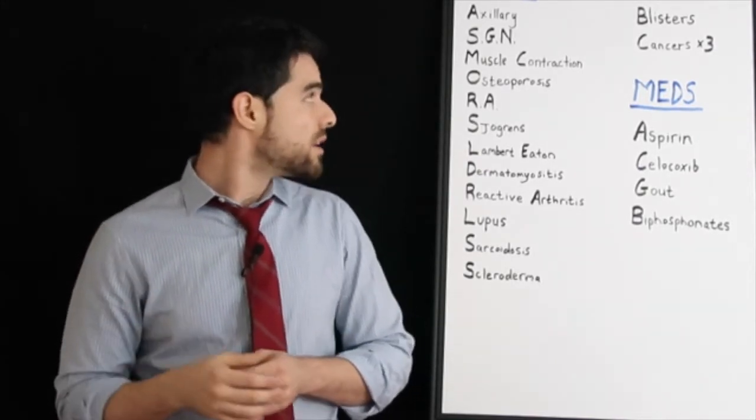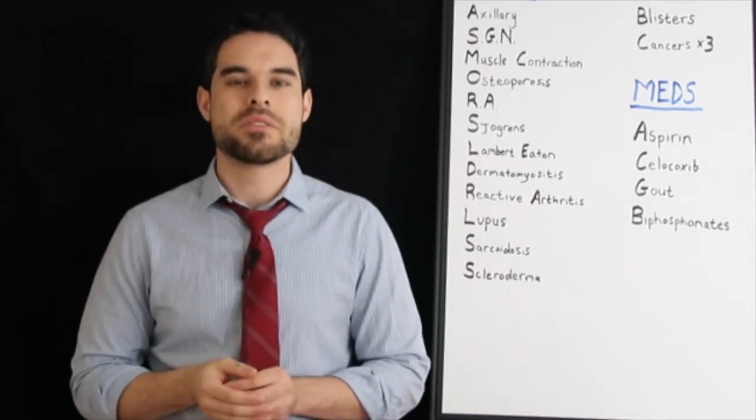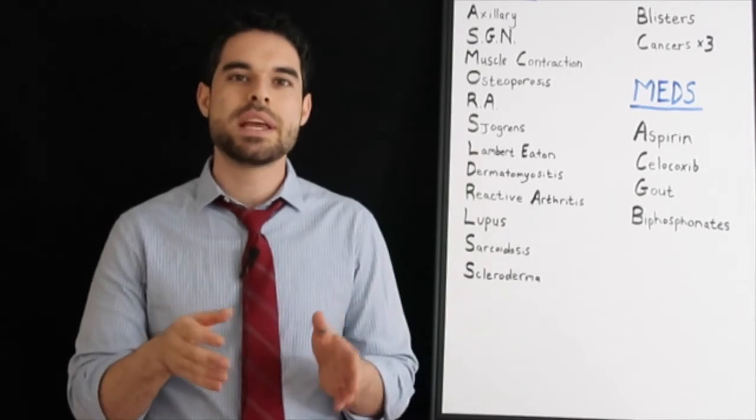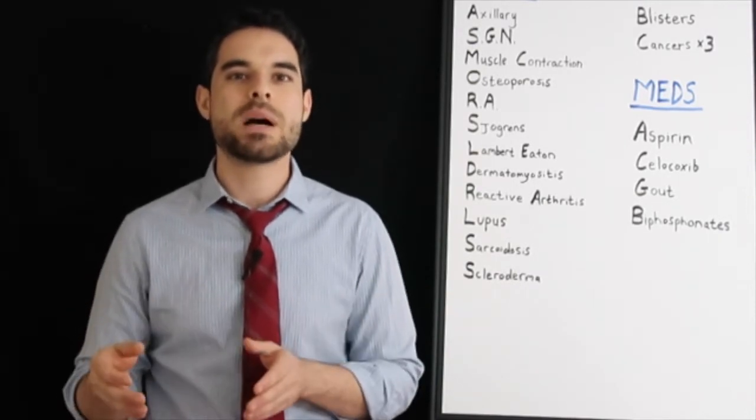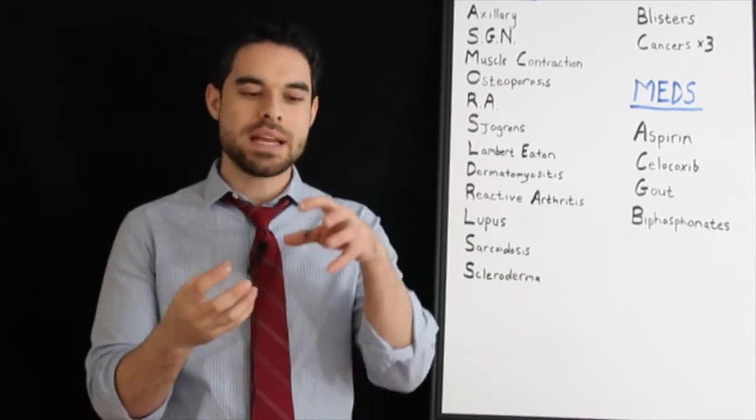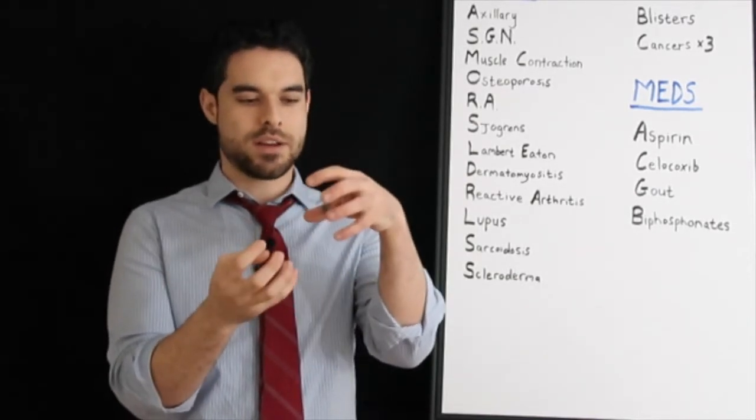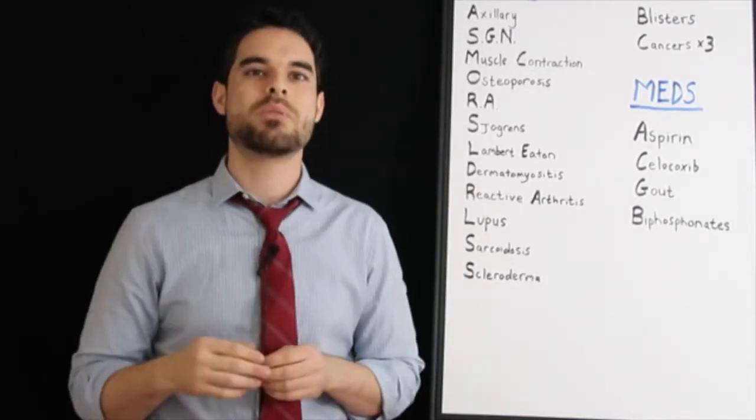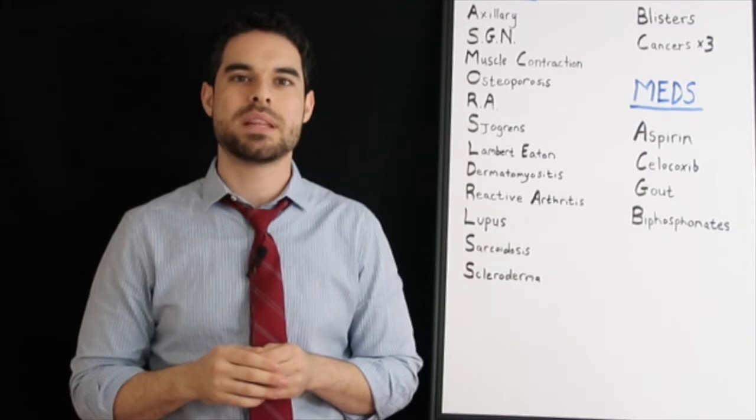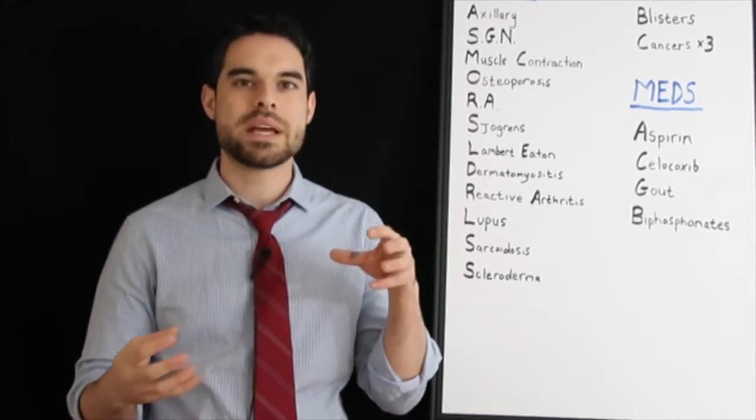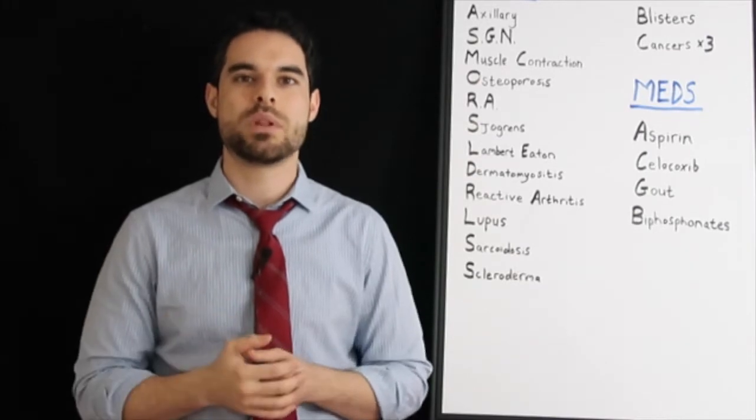The last one here on the MSK section is scleroderma. There's a diffuse and a limited form. The diffuse has the anti-SCL-70s and the anti-TOPO-1 antibodies. To review, topoisomerase is responsible when the DNA gets too clustered and you want to release some of the tension. You want to cut one of those bands. That's done with TOPO-1. It cuts one of them and so it releases some tension. Later it will re-anneal.